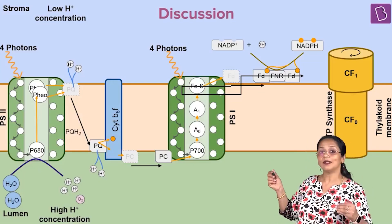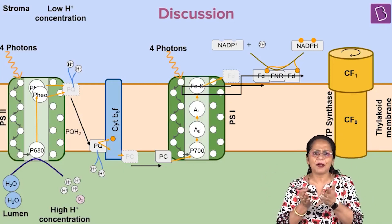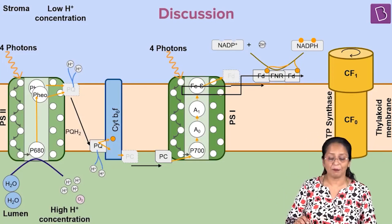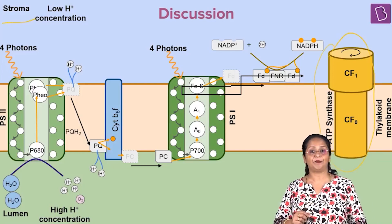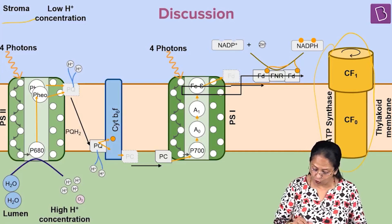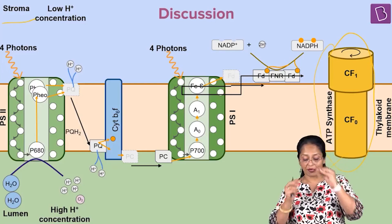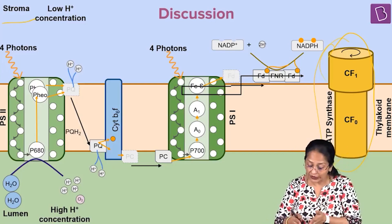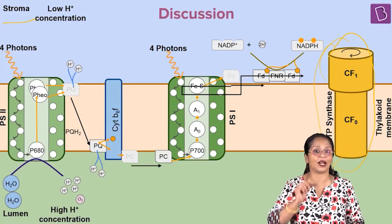This is a pictorial representation of the thylakoid membrane, basically part of the chloroplast. This is the thylakoid membrane and here you have the stroma. Now this is your ATP synthase. ATP synthase is made up of two parts: you have the CFO, which is a cylindrical region in the thylakoid membrane, and the CF1 is projecting into the stroma. Within the CFO is a channel — a proton channel through which protons can travel.